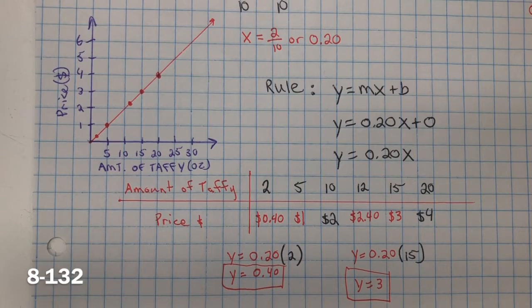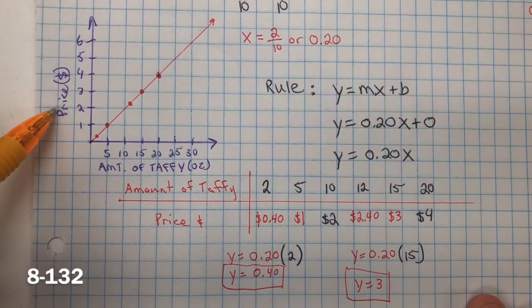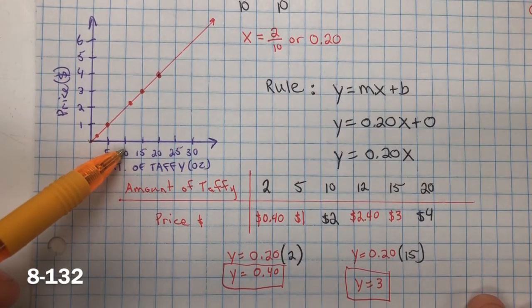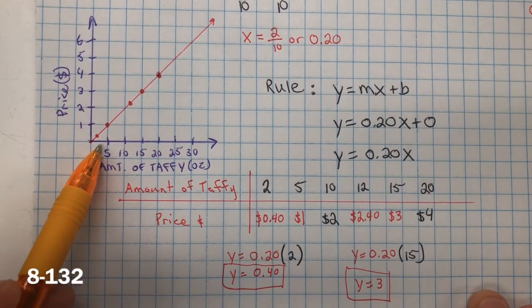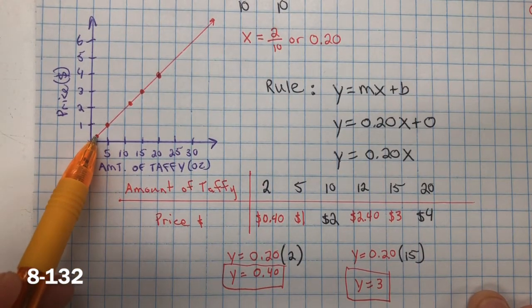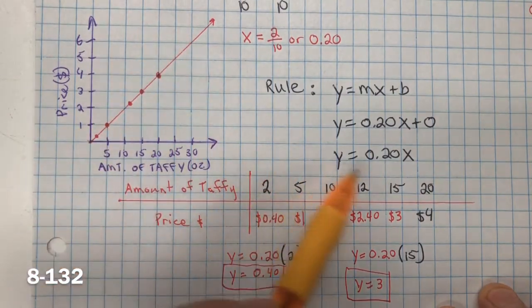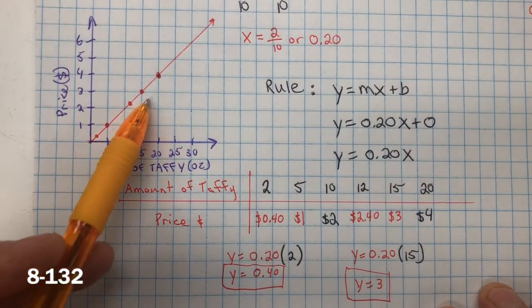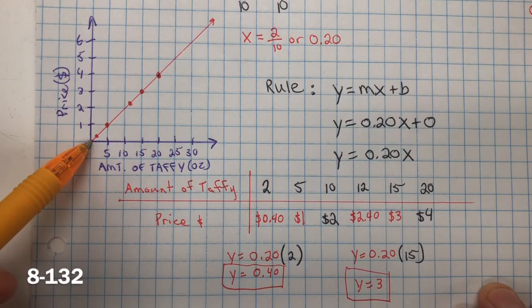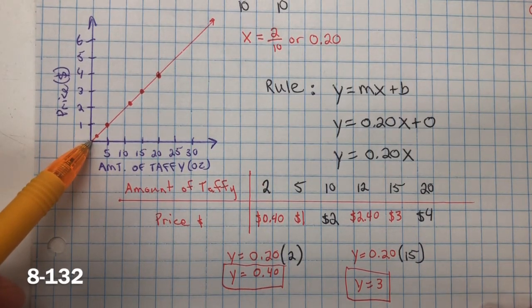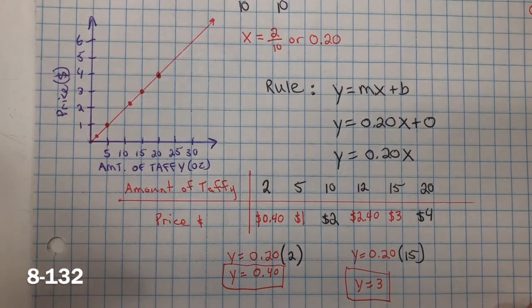Part B, we need to graph the values in the table. So we have the dependent, the price depends on how much taffy you're buying, and so here 2 ounces cost 40 cents, and we know that it's a constant rate of change, so it has to be linear, because there's a constant rate for every ounce that you buy is 20 cents, so it's going up at a constant rate. And we know it's proportional, because 0 ounces of taffy is going to cost 0 dollars. So remember, proportional is that it's linear and it starts at the origin.